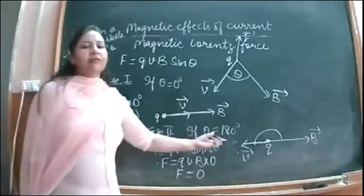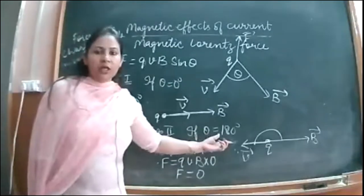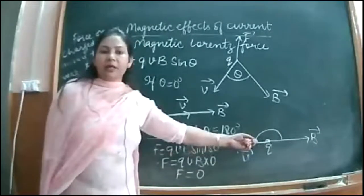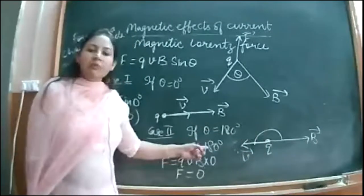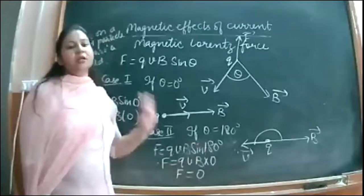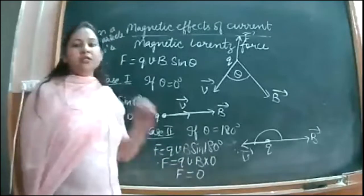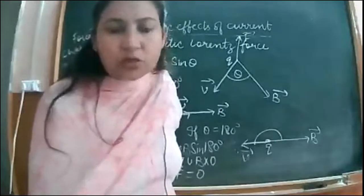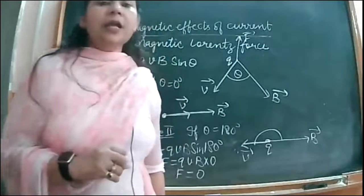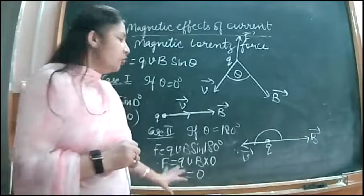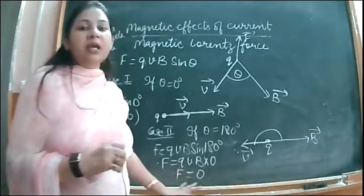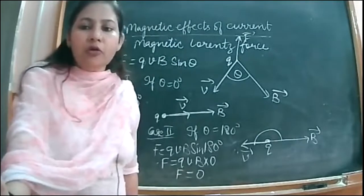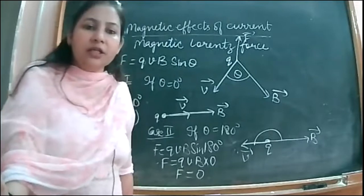Second case: if theta is 180° — if the charge particle is moving opposite to the magnetic field, theta is 180 degrees, sin 180° is 0, then force is 0. So we conclude that whether the charge particle moves parallel or anti-parallel to the magnetic field, no force will be acting on it.